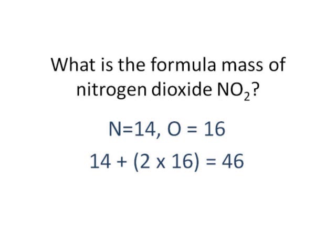So we've got one nitrogen, two lots of 16, which is oxygen. The formula mass of nitrogen dioxide is 46.